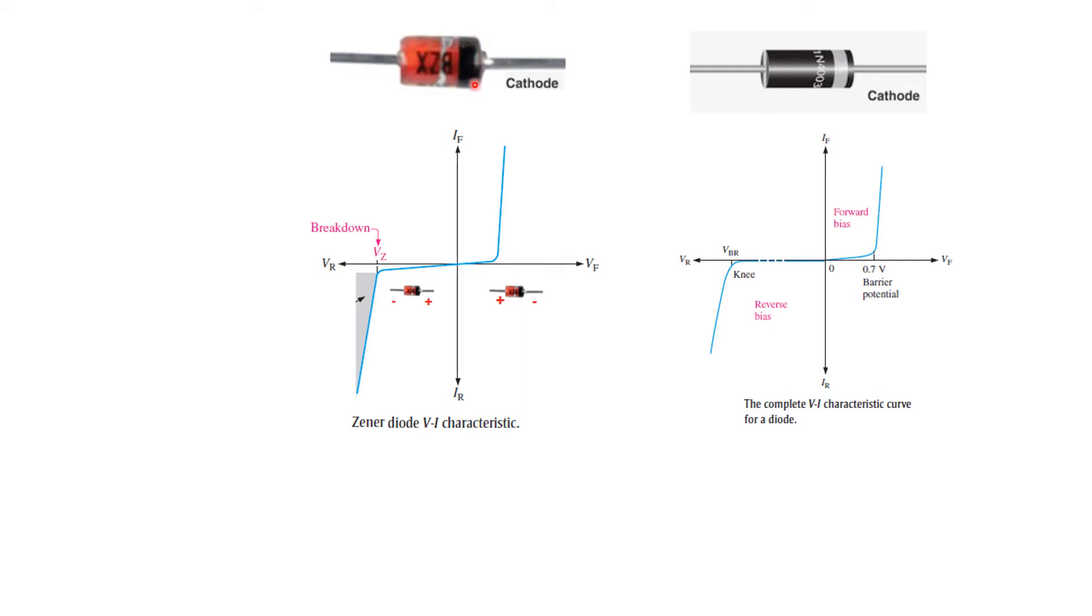This is a normal diode and the Zener diode looks like this. The black band here shows the cathode just like this white band on the normal diode showing the cathode. If you see the characteristics curve, there is not much difference between the two. They look alike.